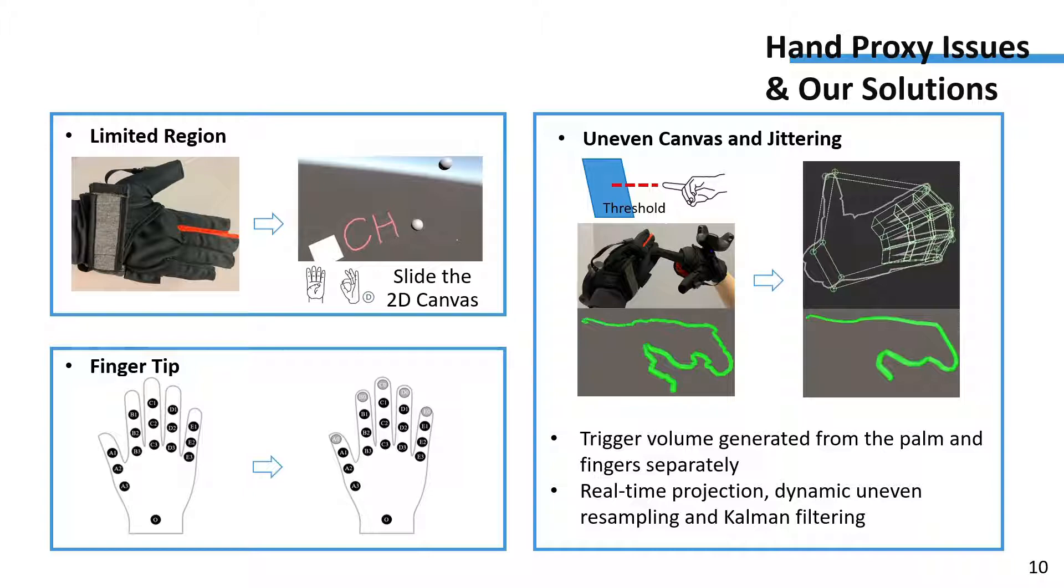Finally, it is challenging for users to make the canvas hand stable during sketching. Thus, our system offers real-time projection, dynamic uneven resampling, and Kalman filtering to beautify strokes.